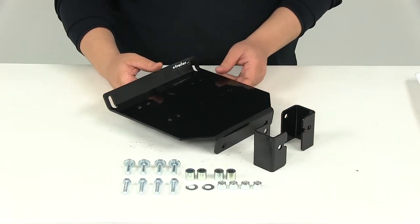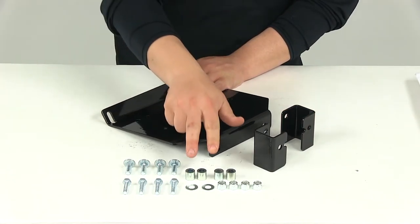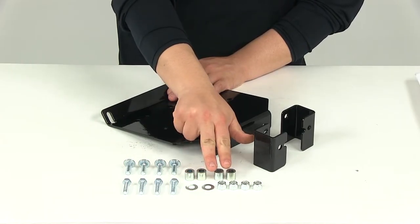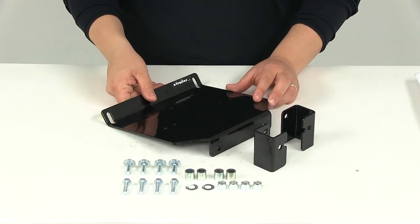Now, when installing this on the RZR 900, you're going to need to use the spacers. That's going to be these right here. These are going to go between the frame and the roller fairlead bracket.